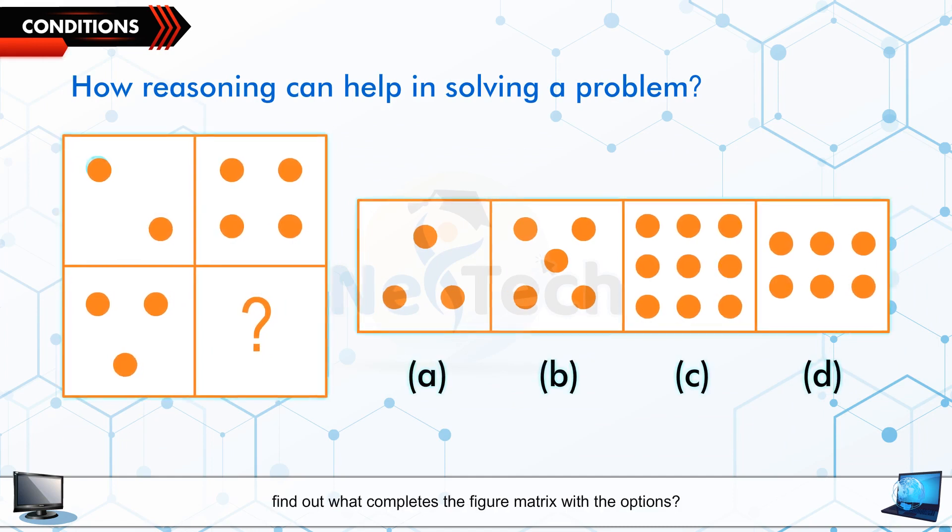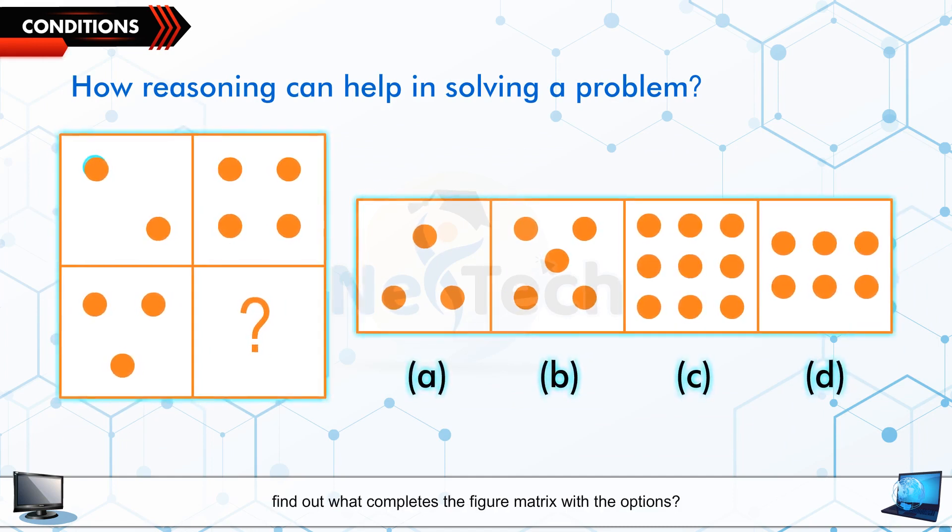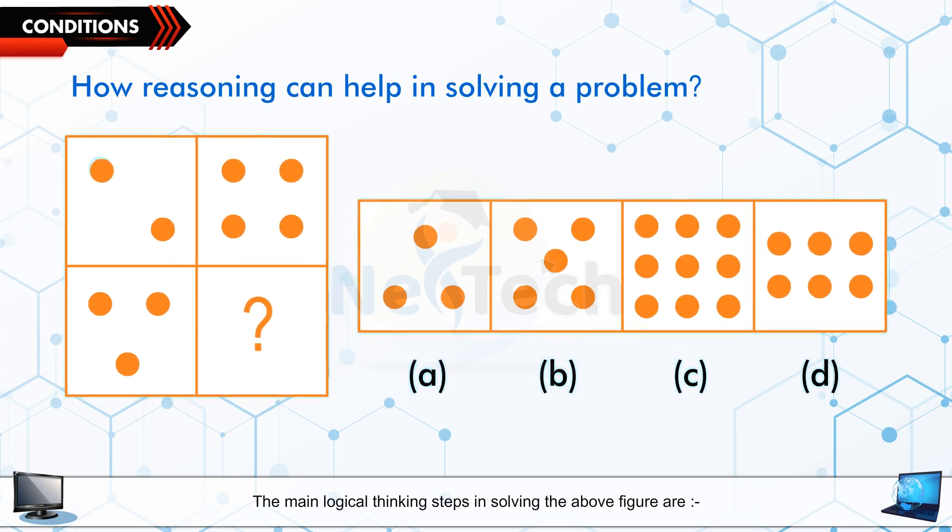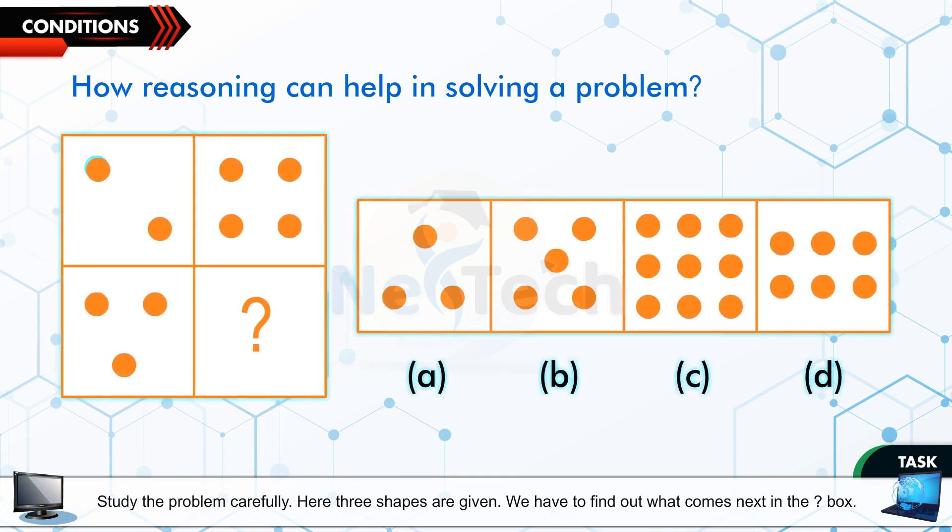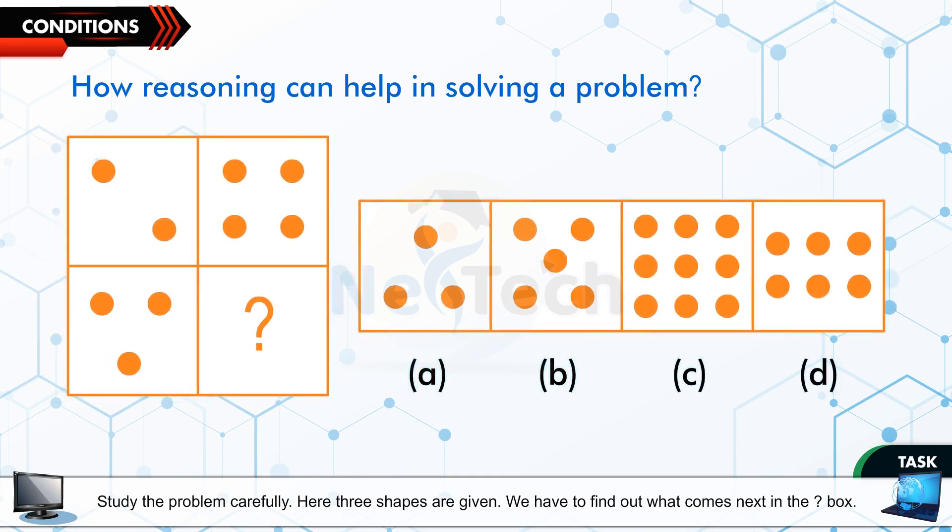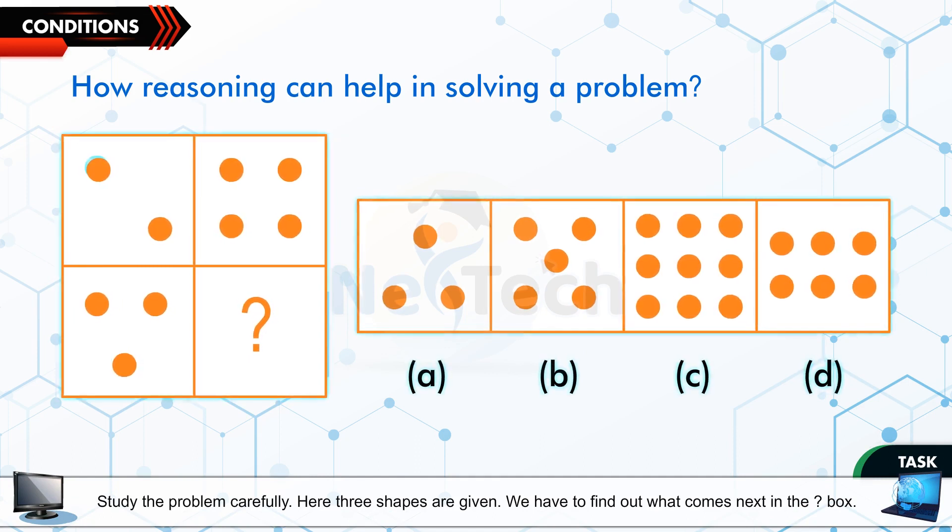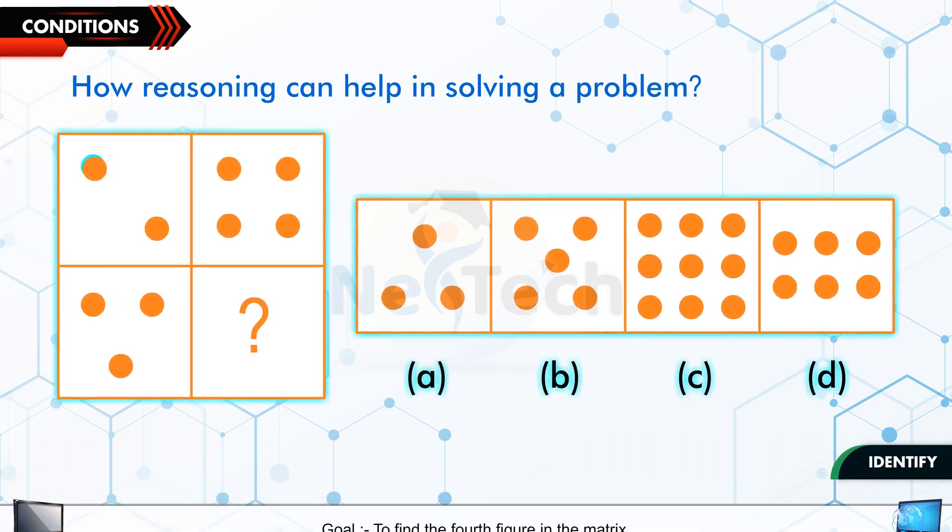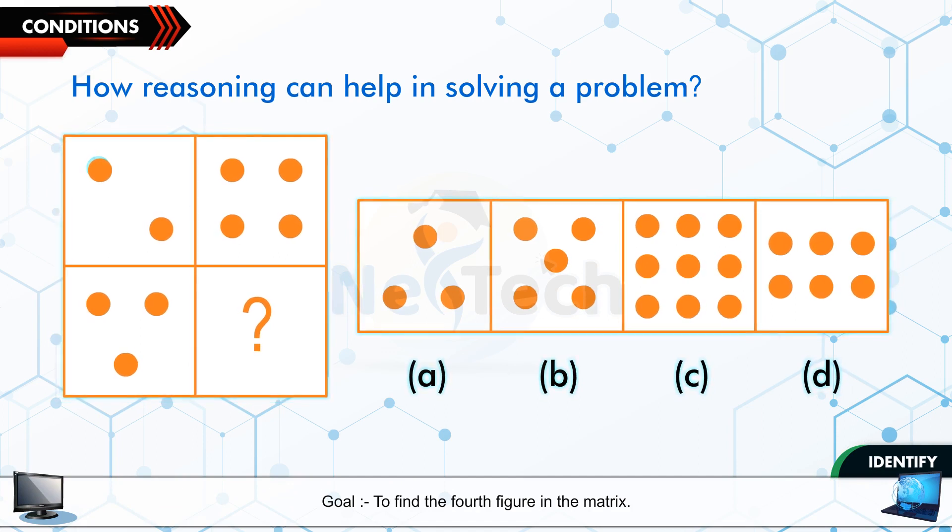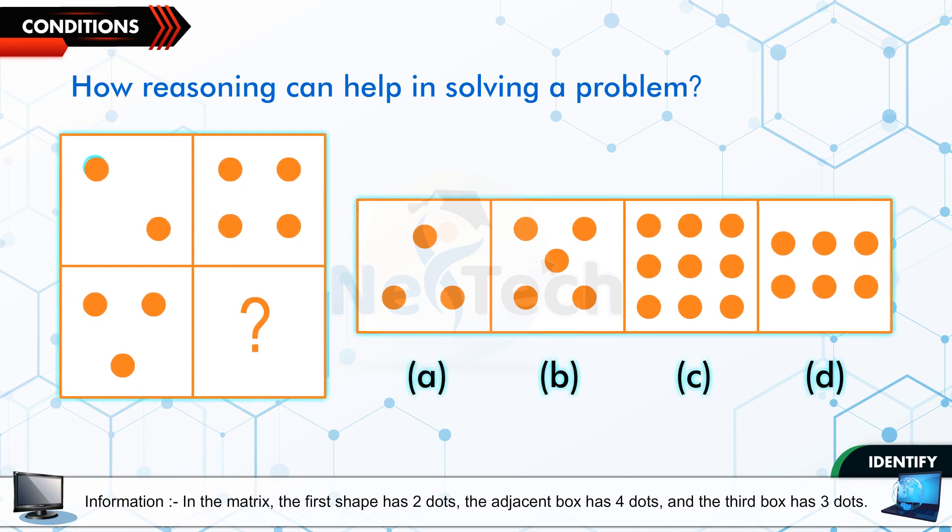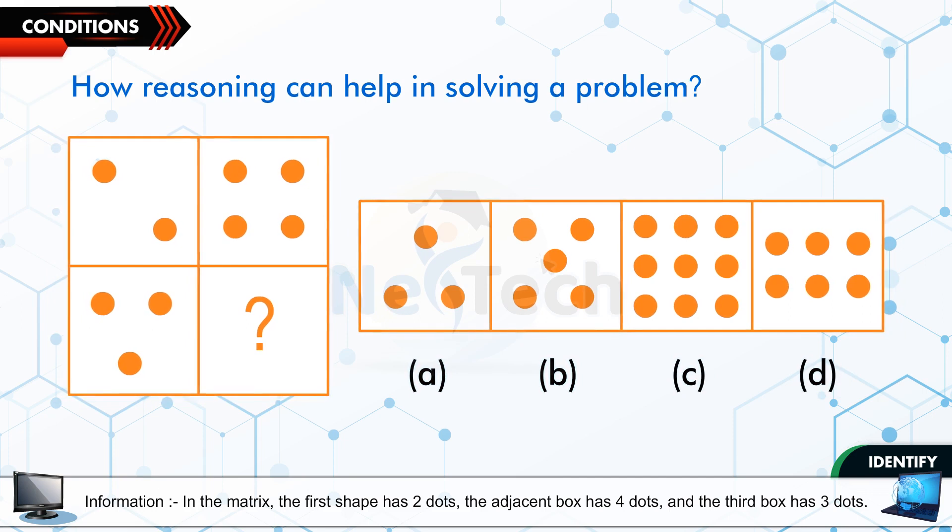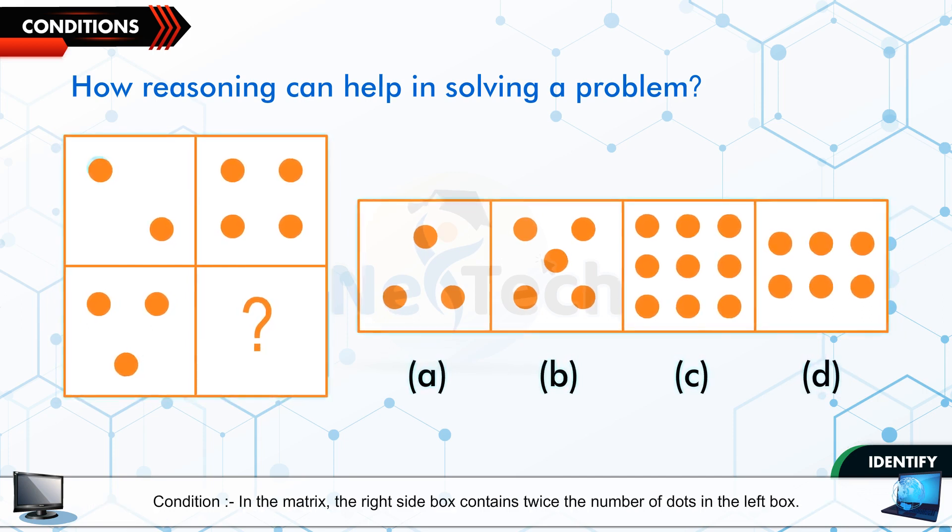Let us take another example. Look at the following question: Find out what completes the figure matrix with the options. The main logical thinking steps in solving the above figure are: Task—Study the problem carefully. Here, three shapes are given. We have to find out what comes next in the question mark box. Identify Goal: To find the fourth figure in the matrix. Information: In the matrix, the first shape has two dots. The adjacent box has four dots. And the third box has three dots.